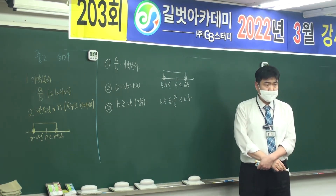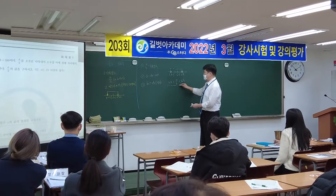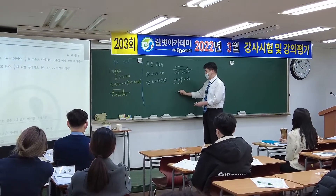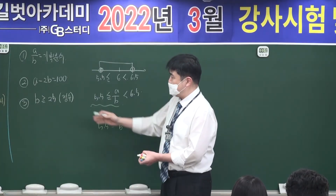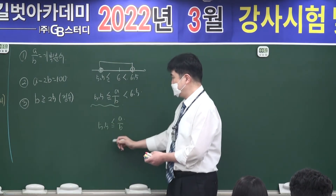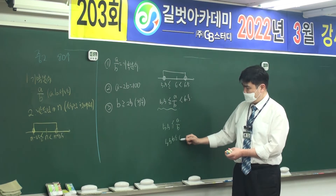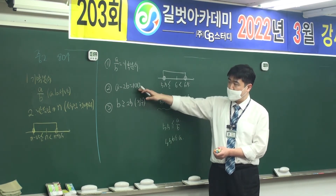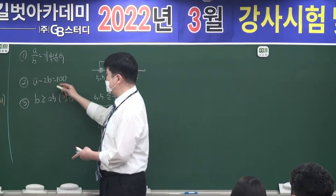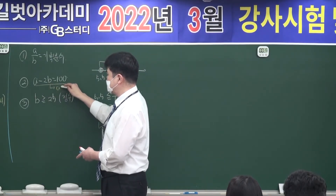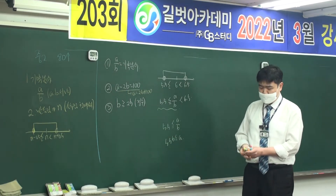Now we'll figure out what x is. I will get the second value of b. The second value uses a minus 2b equals 100, so a equals b plus 100.